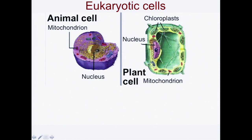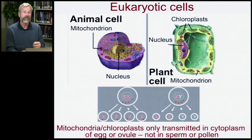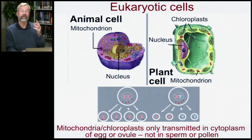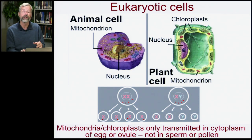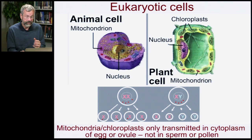These organelles — the mitochondria and the chloroplasts — are only transmitted in the cytoplasm. As we saw in the lecture on selfish genetic elements, they're passed on in the eggs or the ovule, not in the sperm or the pollen. But I want to go into more detail about what they do and where they came from.